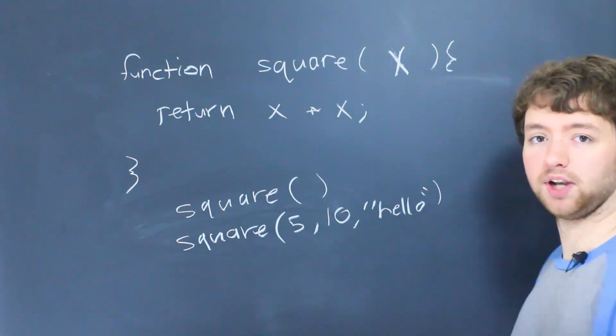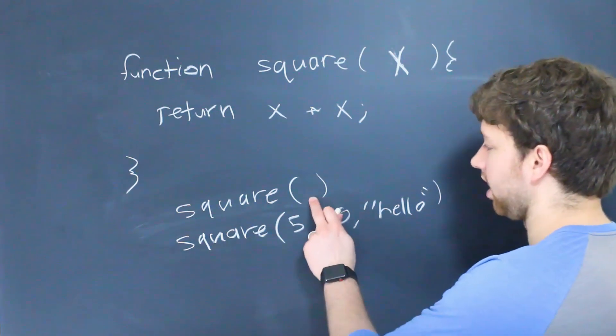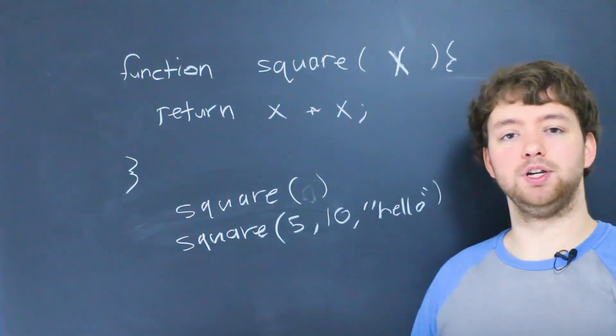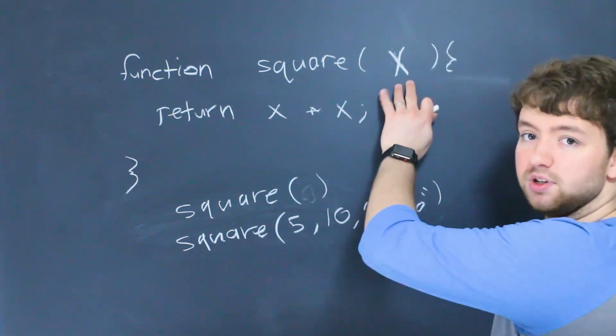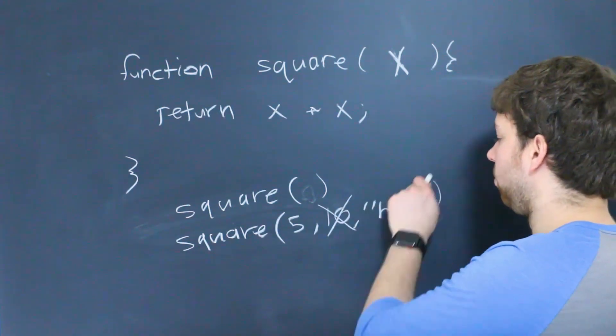But basically what's going to happen is if you don't assign a value for a particular parameter, it's going to be undefined. If you pass multiple arguments and there's not enough room to store them all, then these ones will just be ignored.